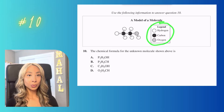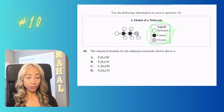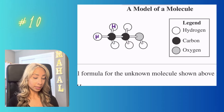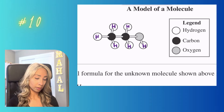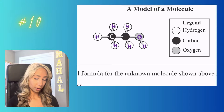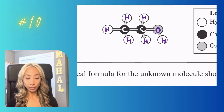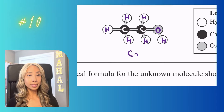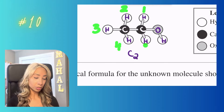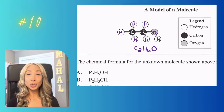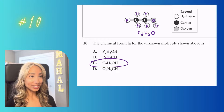Number ten: using the legend where hydrogen is the white circle, carbon is the dark circle, and oxygen is the gray circle, I'll label everything in the diagram. The molecule consists of two carbons, six hydrogens, and one oxygen. Finding the option that matches that count gives us option C, so the answer is C.